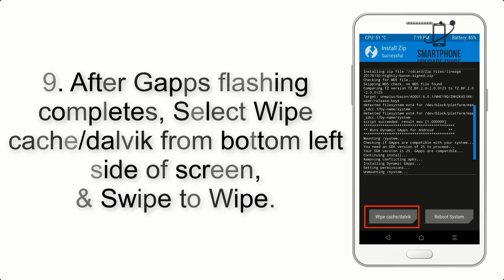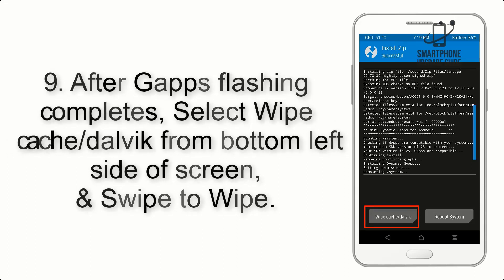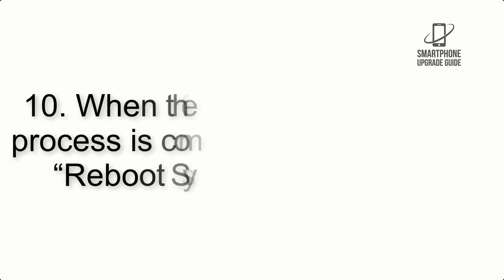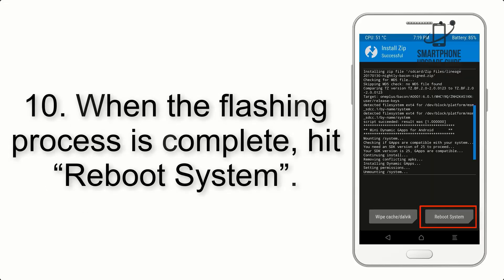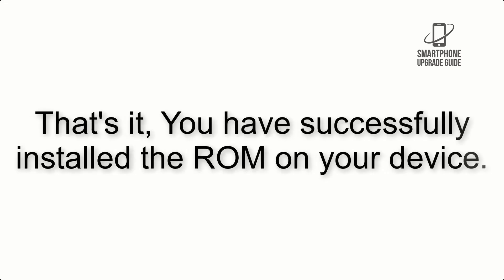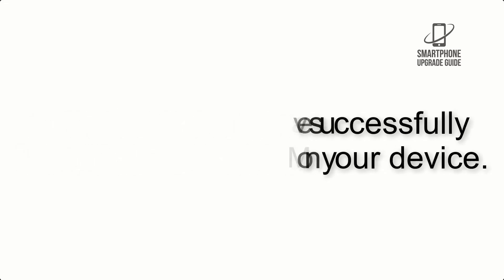Step 9: After GApps flashing completes, select Wipe Cache and Dalvik from the bottom left side of the screen and swipe to wipe. Step 10: When the flashing process is complete, hit Reboot System. That's it — you have successfully installed the ROM on your device.